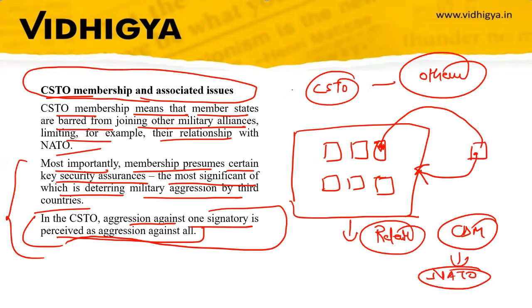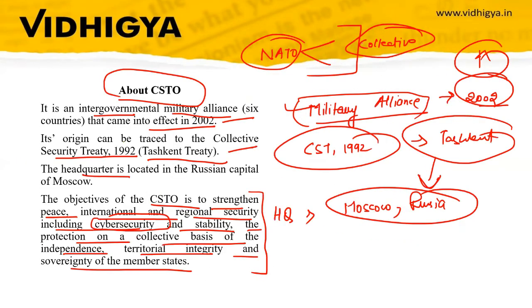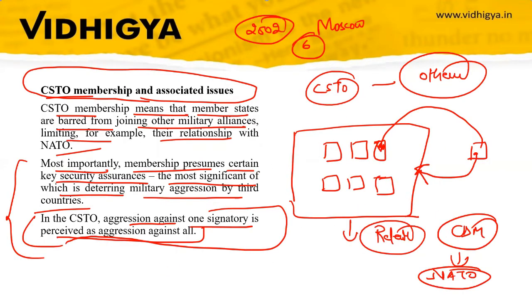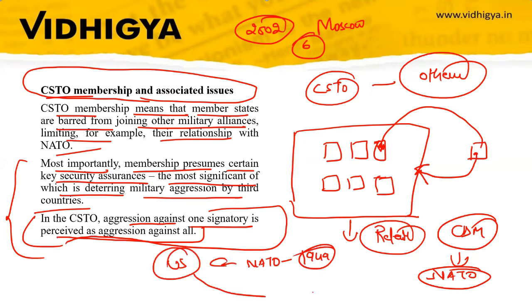So we have discussed all the basic information related to CSTO: established in 2002, headquartered in Moscow, six member countries, originated from the Tashkent Treaty, with the aim to protect territorial integrity and sovereignty of member states. We also discussed NATO — the North Atlantic Treaty Organization — founded in 1949, led by the USA, based on the principle of collective defense.